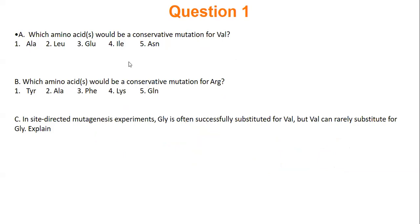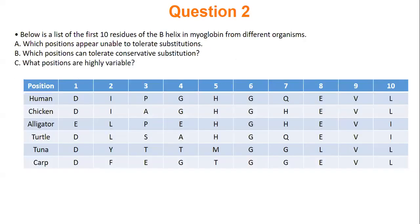Shrinking an amino acid side chain is usually no problem; growing a side chain through a mutation can be a problem. That's where we left off on Wednesday. Here I have a little more practice. By looking at our amino acids, we need to identify which positions are invariable, which positions can tolerate conservative mutations or substitutions, and which positions are highly variable. For positions 1 through 10, assign them a letter: A for unable to tolerate substitutions, B for conservative substitutions tolerated, or C for highly variable.